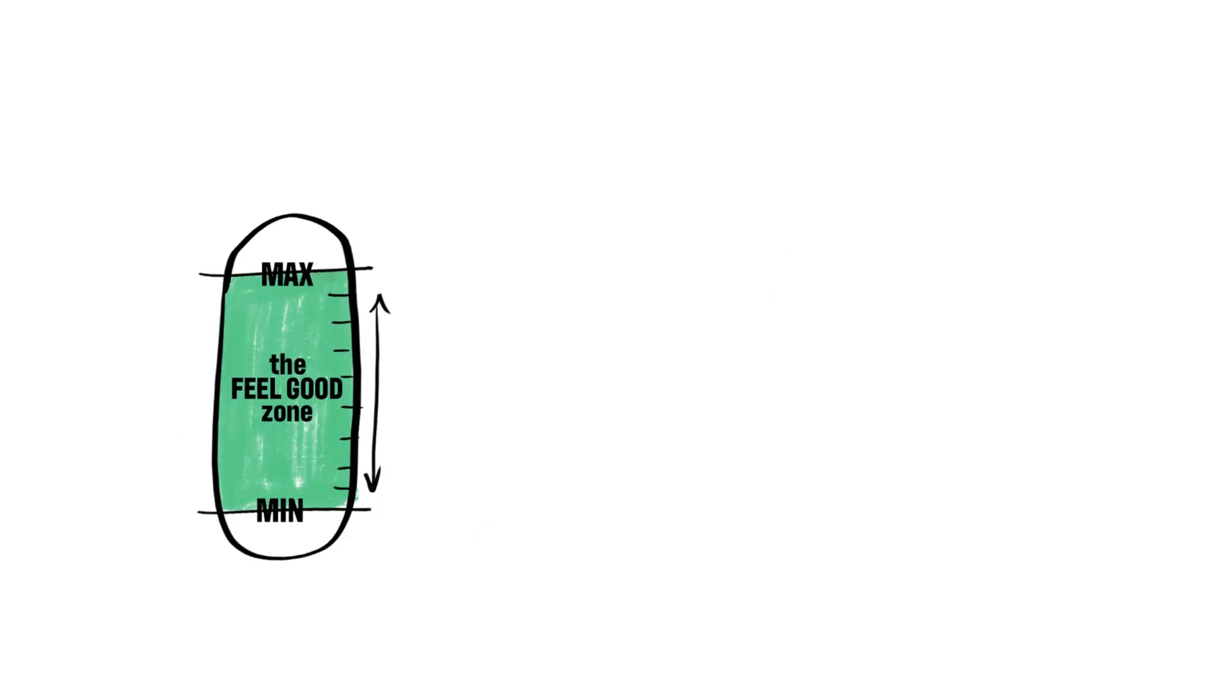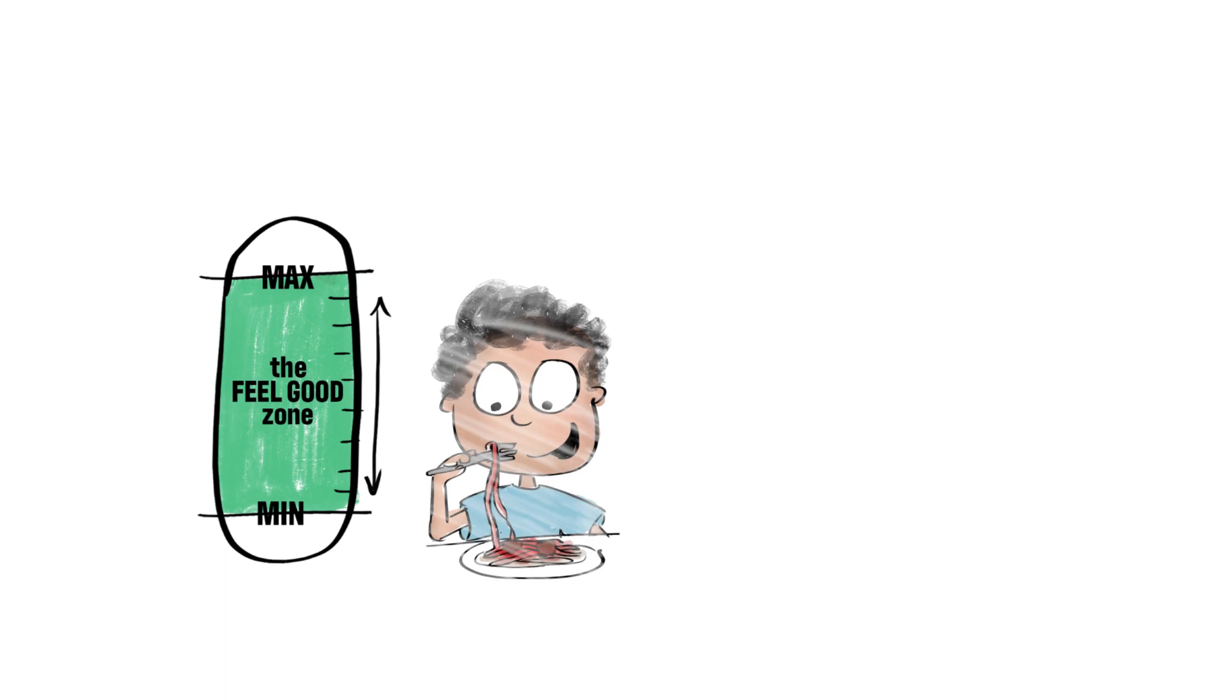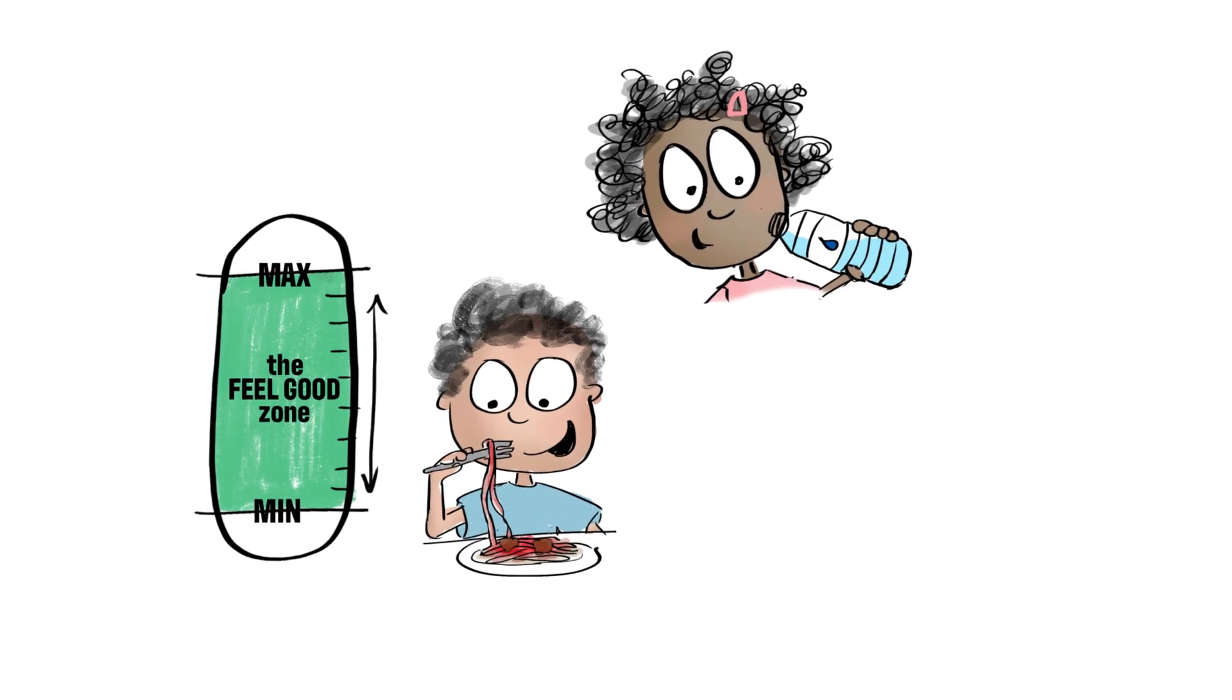Before technology, people got dopamine from simple things like eating, drinking water, and socializing.